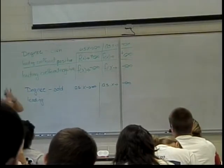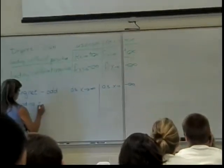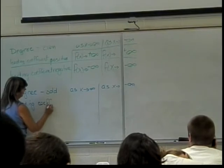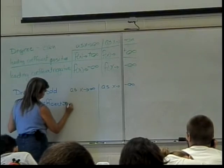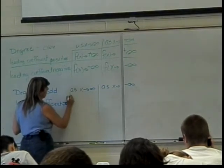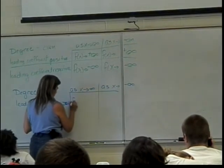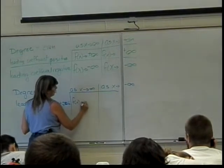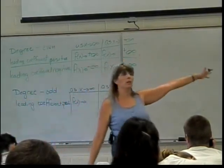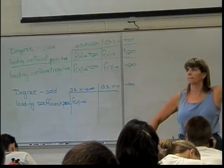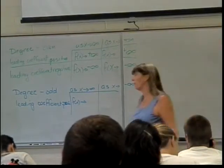Positive coefficient odd degree. I'm going to erase that part. What happens as I head off that way? So off to the right, heading off to positive infinity with my x's. Where's my graph going? Positive infinity. It's going to positive infinity.